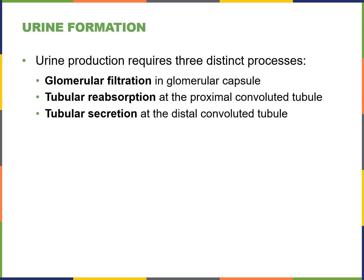To process filtrate into urine, three different processes must occur. First, glomerular filtration in the Bowman's capsule. Second, tubular reabsorption at the proximal convoluted tubule — this is where we reabsorb glucose, amino acids, salts, and water. Third, tubular secretion at the distal convoluted tubule, where we get rid of more waste and exchange regulating ions to eventually form urine from the filtrate.